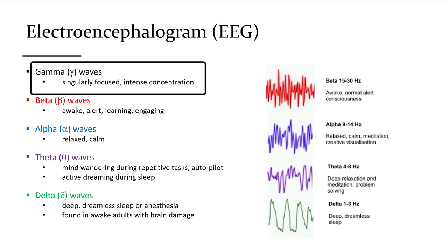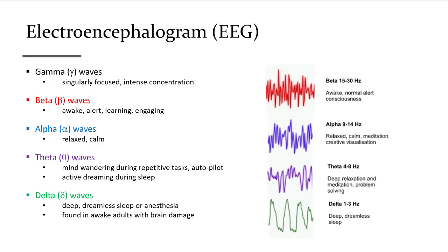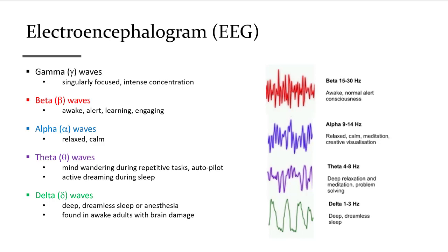Gamma waves predominate in a person experiencing intense focus and concentration that excludes all other sensory input — seen in high-level musicians or highly focused individuals oblivious to their surroundings. An average person who is alert, attentive, or concentrating will display mostly beta waves, which are low voltage and high frequency. Beta waves would likely dominate in your brain while taking an exam.